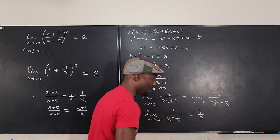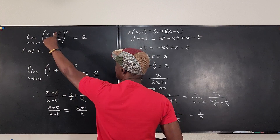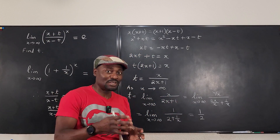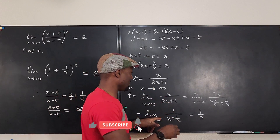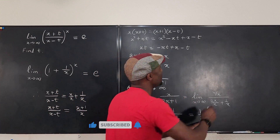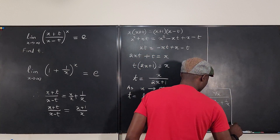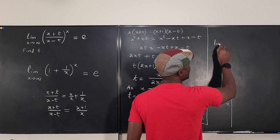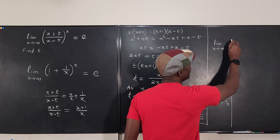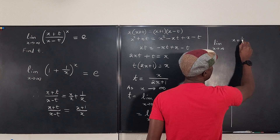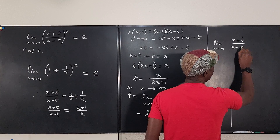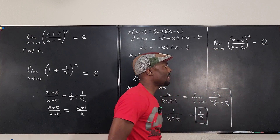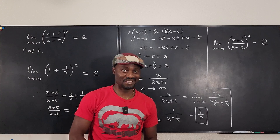Therefore, replacing t with 1 half, this is another way to write e — and we just generated it. So the answer is: the limit as x goes to infinity of x plus 1 half divided by x minus 1 half, raised to the power x, equals e. Never stop learning, because those who stop learning have stopped living. Bye-bye.